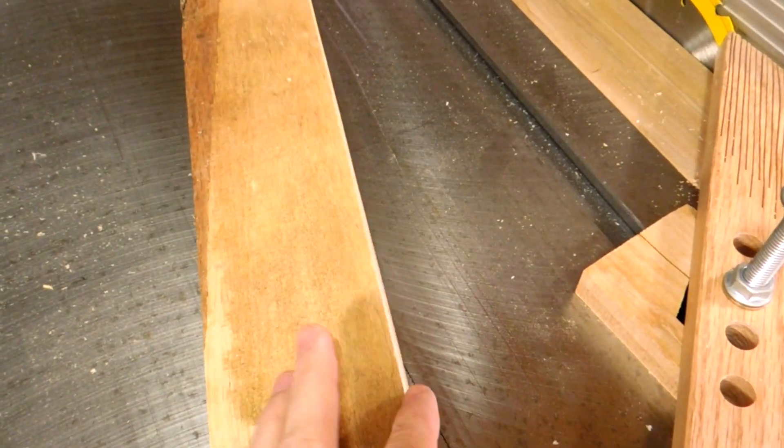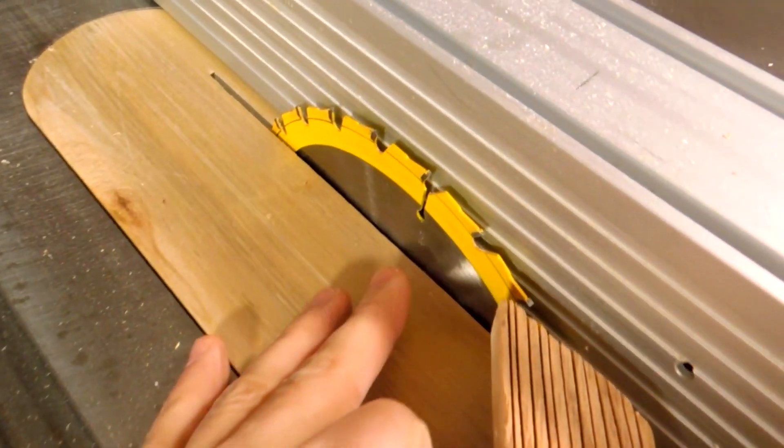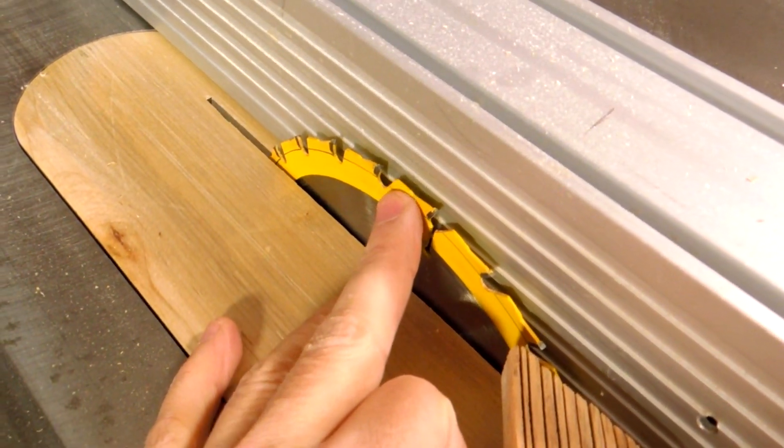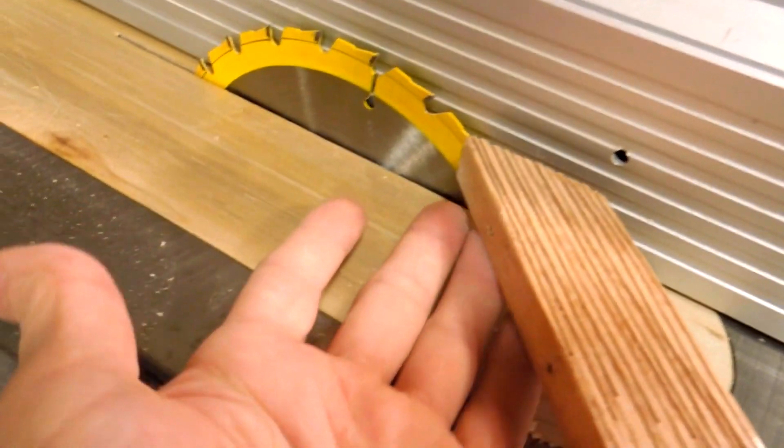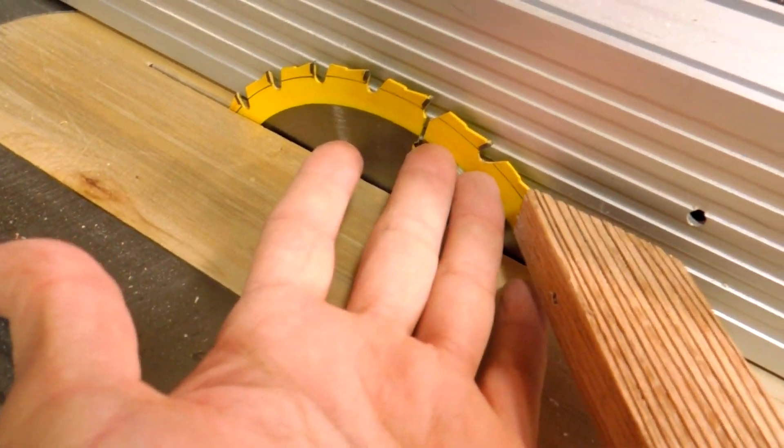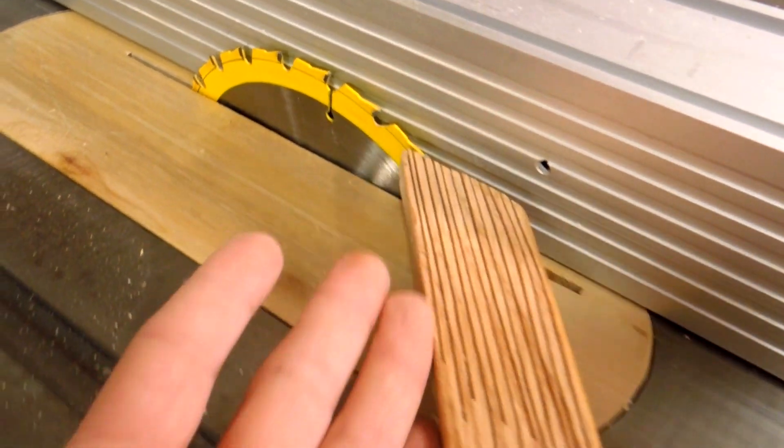Now I need to rip a thin layer off of this board and I set the blade to be a bit over half as high as the board is wide. I've got my feather board actually at a bit of a height so it supports it near the center of the cut.